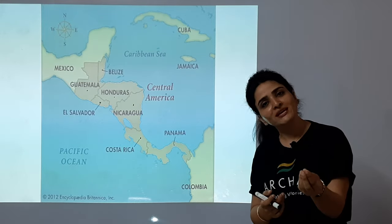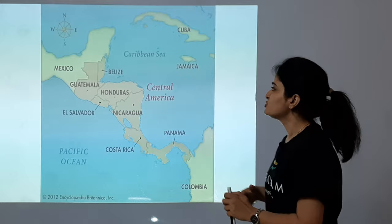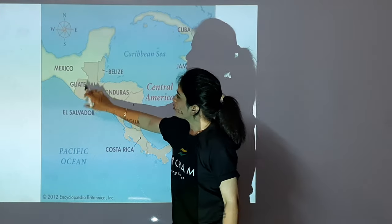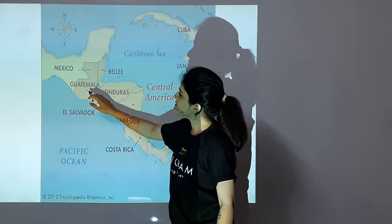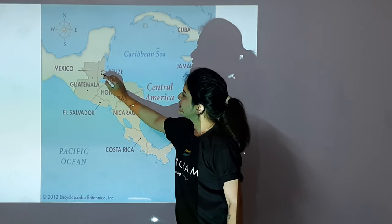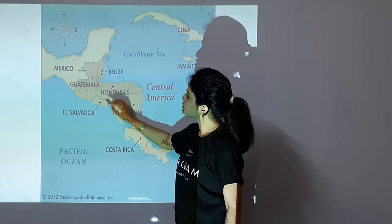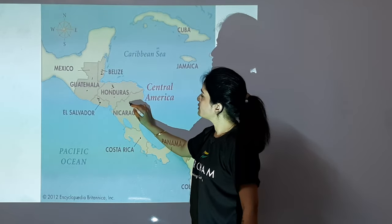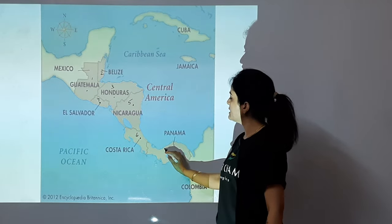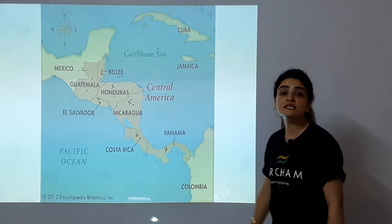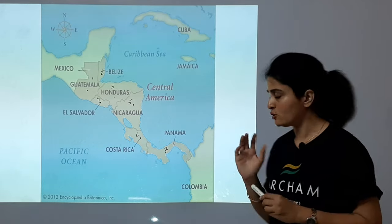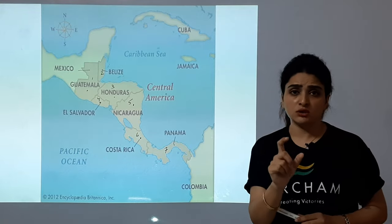There is a little story that we use to remember. When we come from Mexico, which countries follow? Guatemala, Belize, Honduras, El Salvador, Nicaragua, Costa Rica, and Panama — these are the seven countries. So now, what is the story? A goat with bellies, riding a Honda bike.